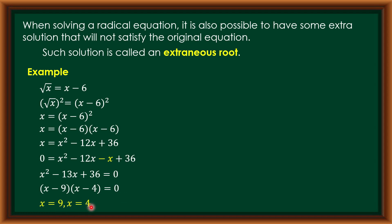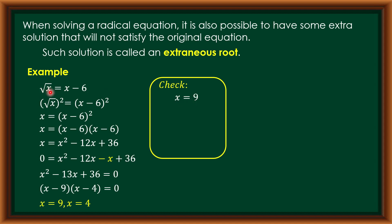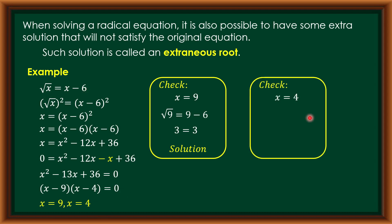Check x = 9: square root of 9 equals 9 minus 6, which gives 3 equals 3. True. So x = 9 is a valid solution. Check x = 4: square root of 4 equals 4 minus 6, which gives 2 equals negative 2. These are not equal, so x = 4 is an extraneous root. Remember, an extraneous root does not satisfy the original equation, so it is a must to check the solution.